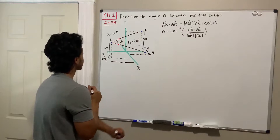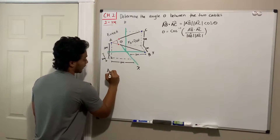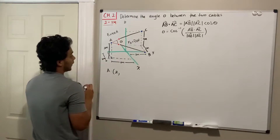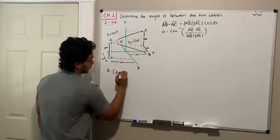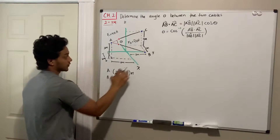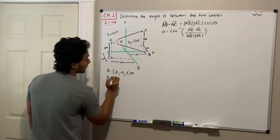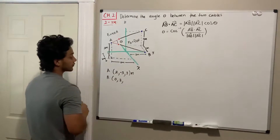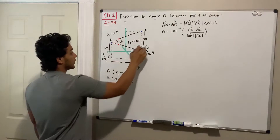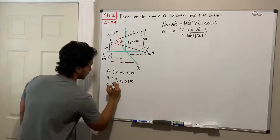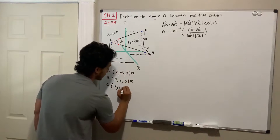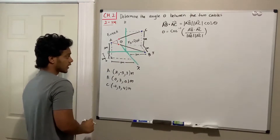First we need to find vectors AB and AC, so we define where A, B, and C are located. Point A: x = 2 m, y = −3 m, z = 3 m. Point B: x = 0, y = 3 m, z = 0. Point C: x = −2 m (going inside), y = 3 m, z = 4 m.